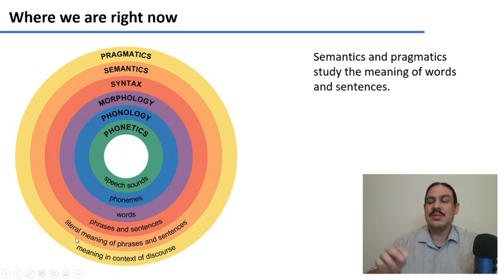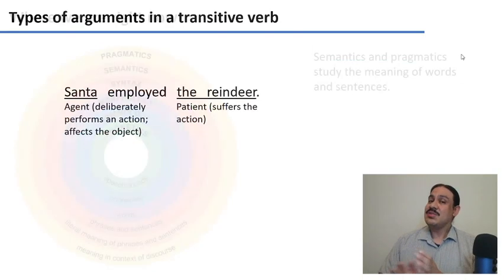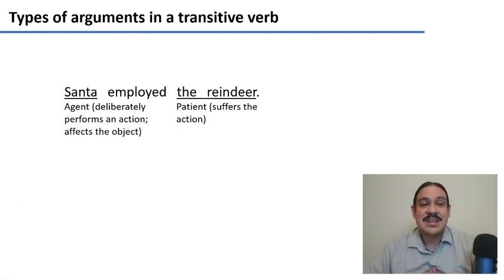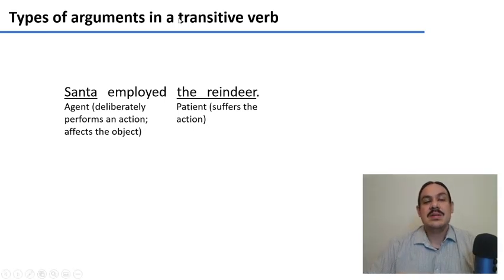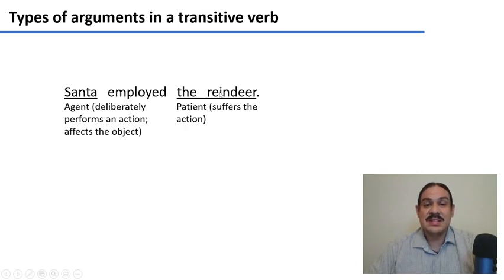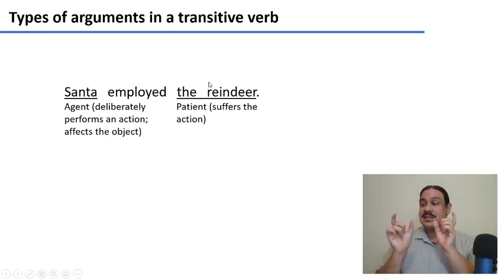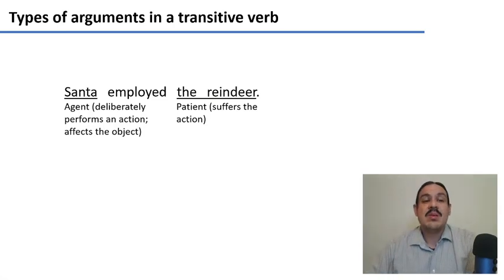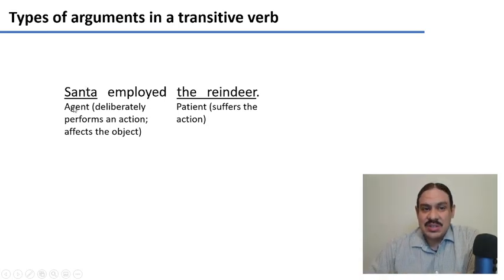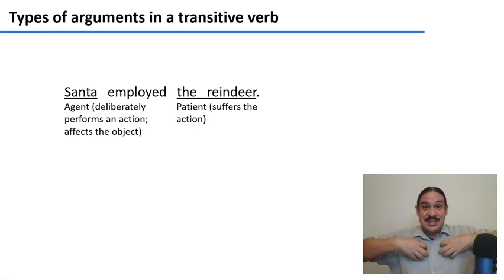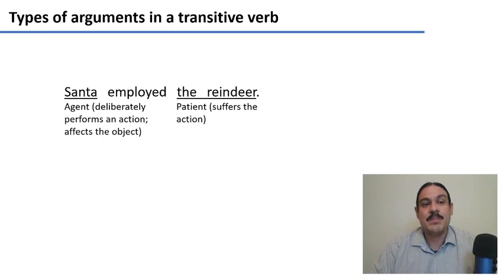Like what does the word chocolate mean, or what does the word house mean. But let's transition from syntax to semantics by looking at the types of arguments in a transitive verb. So here we have the sentence: Santa employed the reindeer. Santa is the subject and the reindeer is the direct object — these are structural characteristics. We could also describe these words by their relationship to the action. Santa is an agent: someone who performs an action deliberately. He deliberately employs the reindeer, he has made a decision to do this. An agent deliberately does the action and affects the object.